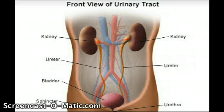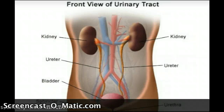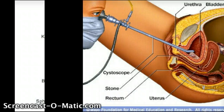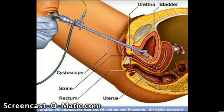A method used to detect UTIs is cystoscopy, which uses a cystoscope to examine the urinary system and seek irregularities.